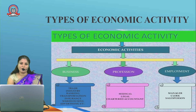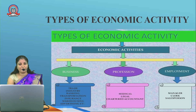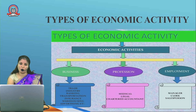Business: the main objective of business is to earn profit through satisfaction of human wants. Profession: we are rendering specialized knowledge of a particular field. For example, a doctor has particular knowledge about medicine, a lawyer has particular knowledge about law and conducts.